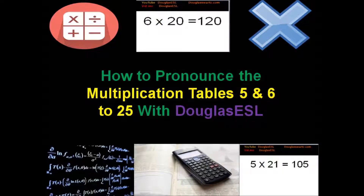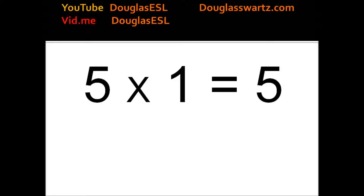How to Pronounce the Multiplication Tables 5 and 6 to 25 with Douglas ESL. 5 times 1 equals 5.